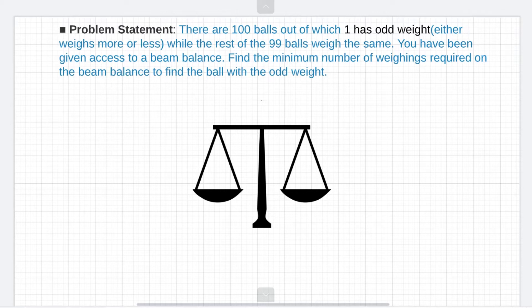So let's go through the problem statement first. The problem says that there are 100 identical balls out of which only one has odd weight and the rest of the 99 have the same weight. Now you are given access to a classic beam balance and you need to find the minimum number of weighings required on the beam balance to find out the ball with the odd weight.